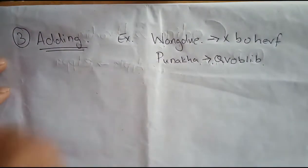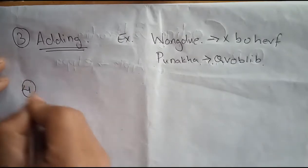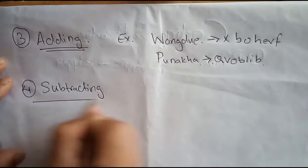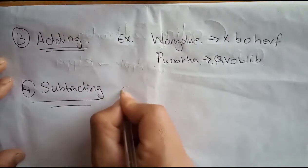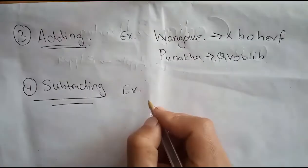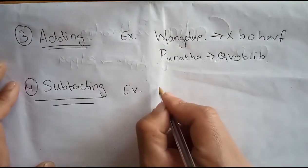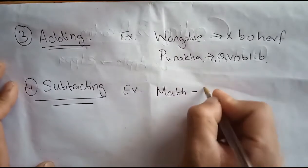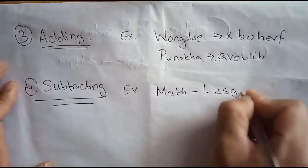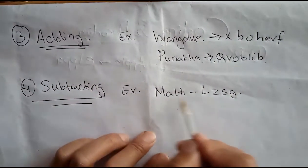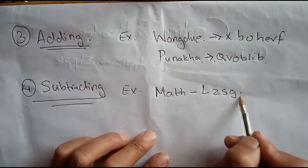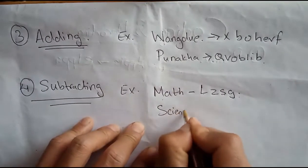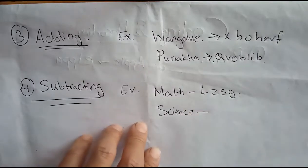Now we move to the fourth type: Subtraction coding. We will look at the subtracting method with an example. If MATH was coded as LZSG, how will SCIENCE be coded? We subtract one from each letter: M→L, A→Z, T→S, H→G.